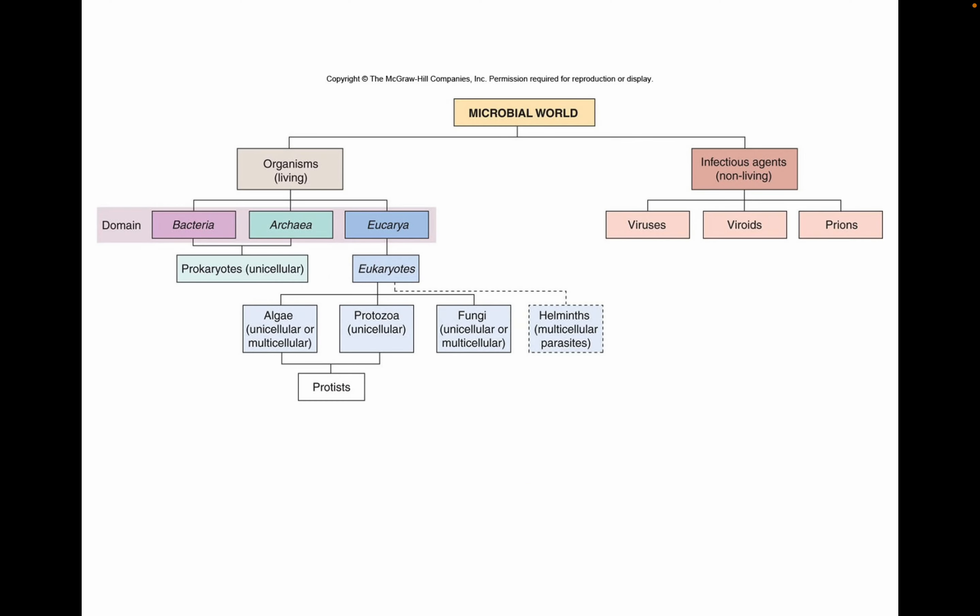In the microbial world, on the left we have organisms — living things. The three domains of living things are bacteria, archaea, and eukarya. Bacteria and archaea together are called prokaryotes; eukarya are eukaryotes. Of the eukaryotic life, algae, protozoa, fungi, and some helminths are all microscopic microbes. There are other infectious agents that are non-living: viruses, viroids, and infectious proteins called prions — these are all infectious agents but not living things.